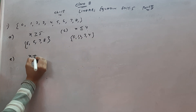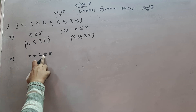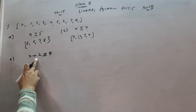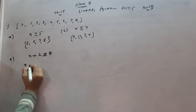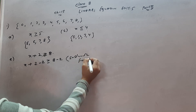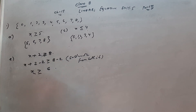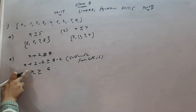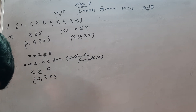For question (c), solve x + 2 < 8. This is a linear inequality — there is no equals to sign. To solve, subtract 2 from both sides: x < 6. So x is less than 6, meaning x is greater than or equal to... actually x < 6 gives values less than 6. The solution set is {0, 1, 2, 3, 4, 5} — but here the answer shown is {6, 7, 8} indicating x + 2 > 8 giving x > 6, so solution set is {6, 7, 8}.